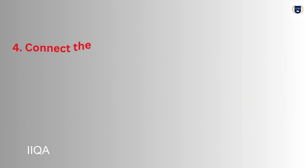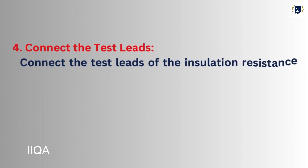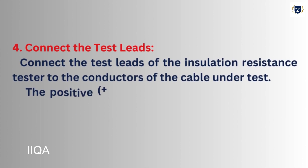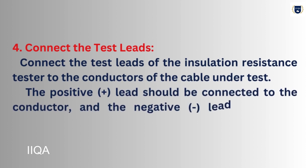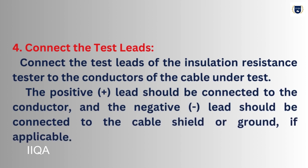Step 4 - Connect the Test Leads: Connect the test leads of the insulation resistance tester to the conductors of the cable under test. The positive lead should be connected to the conductor, and the negative lead should be connected to the cable shield or ground, if applicable.